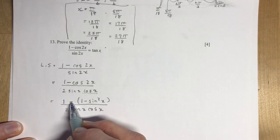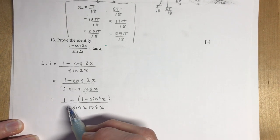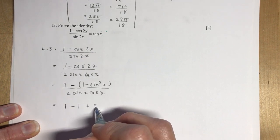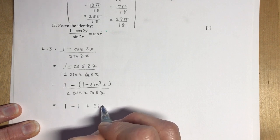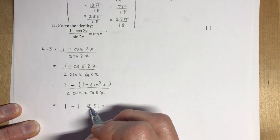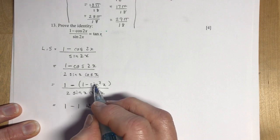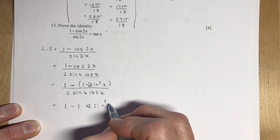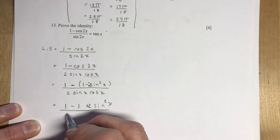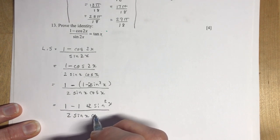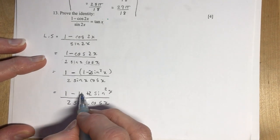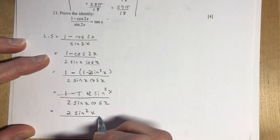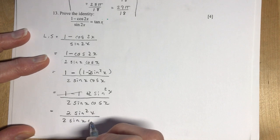So cos 2x, we can replace that with 1 minus 2 sine squared x. Sorry about my throat this morning. Now be careful with this minus sign. Again, that's where trouble happens. So I have 1 minus 1 plus 2 sine squared x. So the 1 minus 1s are going to disappear. I'm running out of room again. So this is gone. And I have 2 sine squared x. This is looking really good, isn't it?